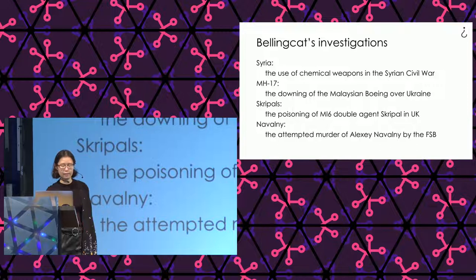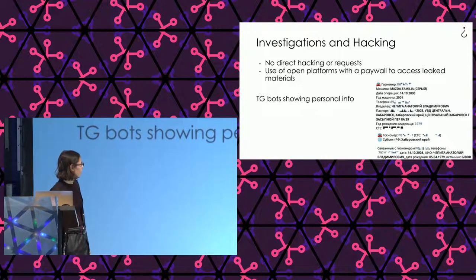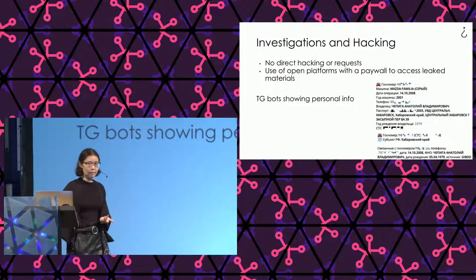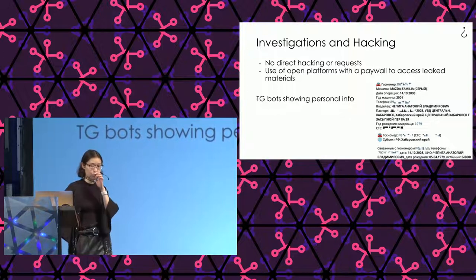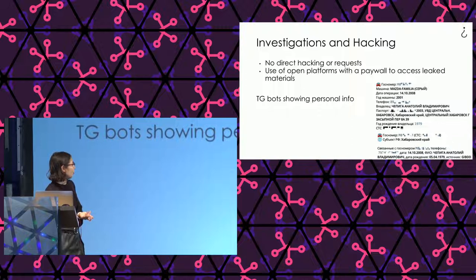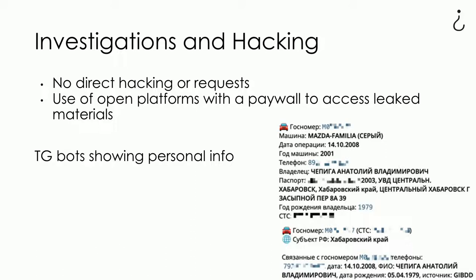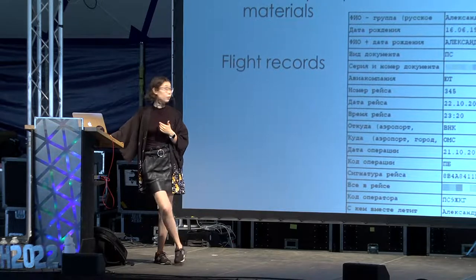Then we have the Skripal and Navalny poisonings, where we used quite a few grey area sources. For the Navalny investigation, we searched for people traveling on the same routes as him and eventually found people who had been traveling with him for years — they were tracing him. We found their passport info, full names, and phone numbers from leaked databases. We then searched those numbers in contact book apps like GetContact and TrueCaller. The contact book app revealed one number was saved as 'FSB, Vladimir Aleksandrov Panaev' — people tend to save contacts by how they know them.